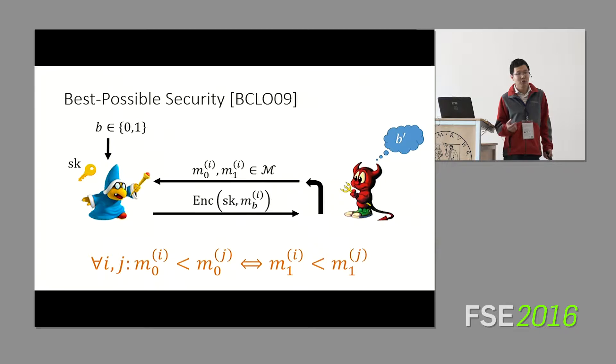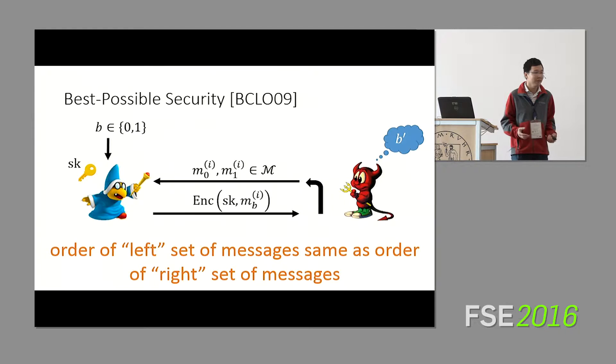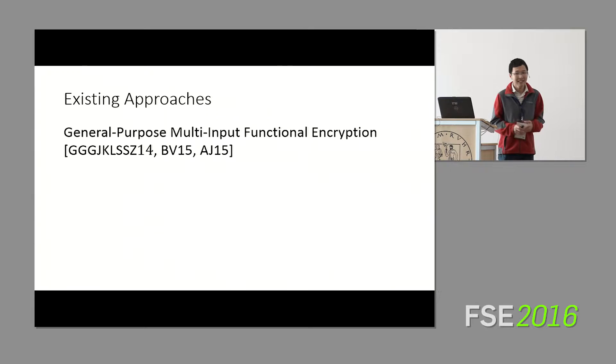Otherwise, the adversary is still free to query the challenger on messages of its choosing. So roughly speaking, this says that the order of the left set of messages must be the same as the order of the right set. This is the notion of best possible semantic security for an order-revealing encryption scheme. This was introduced by Boldyreva, Chenette, Lee, and O'Neill in 2009. So this is the framework that we'll be working under for this talk, this notion of order-revealing encryption.